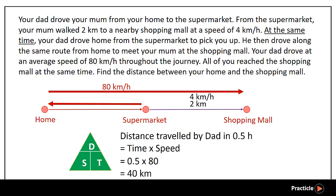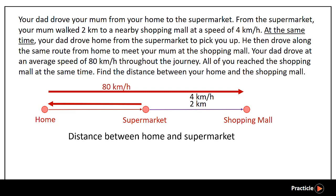The distance between the supermarket and the shopping mall is 2km. So we can find the distance between your home and the supermarket by taking the total distance your dad traveled — 40km — minus 2km. Because your dad traveled to and fro from the supermarket to your home, we divide that amount by 2, since the distances are equal. This gives us a value of 19km.